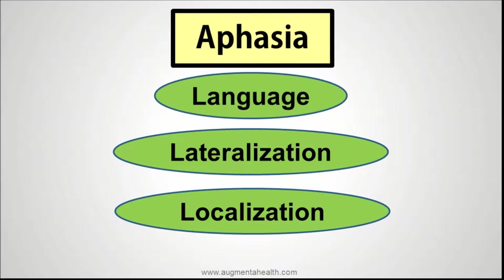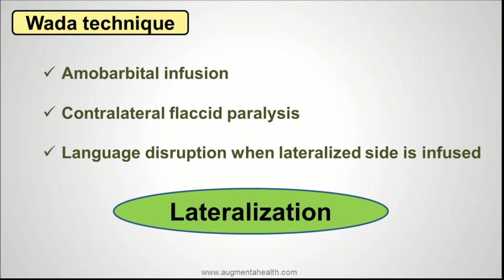When studying lateralization, it is extremely important to understand there are some old techniques like the Wada technique, wherein amobarbital infusion was given on both sides of the carotids. By this technique, if the language was dominant on the left side of the brain, when amobarbital infusion is given on the left side, it would cause language disruption along with a contralateral flaccid paralysis, which would make the experimenter understand that this person's language centers are predominantly lateralized on the left side of the brain.